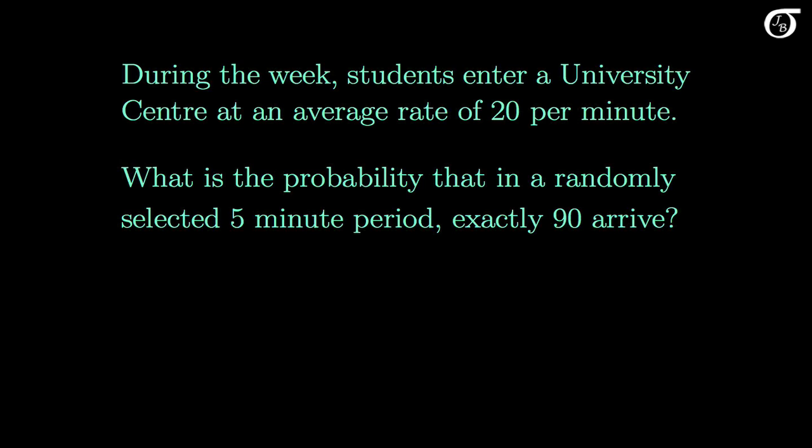Suppose we were faced with this question: during the week students enter a university center at an average rate of 20 per minute. What is the probability that in a randomly selected 5 minute period exactly 90 arrive? It might be tempting to jump right into the Poisson distribution — we are counting events, and for a 5 minute period lambda equals 5 times 20 per minute, which equals 100. But whether it's correct to do so is another question. The rate at which students arrive would vary dramatically during the day, and even restricting to a specific time window, there's still a problem.